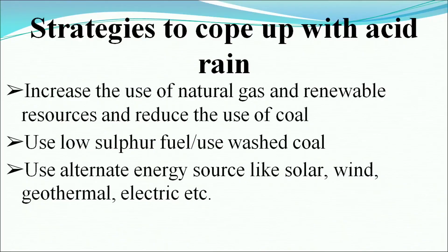Strategies to cope with acid rain: increase the use of natural gas and renewable resources and reduce the use of coal; use low-sulfur fuel; use washed coal; or use alternative energy sources like solar, wind, or geothermal energy.